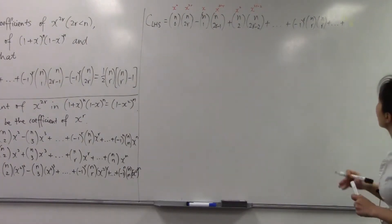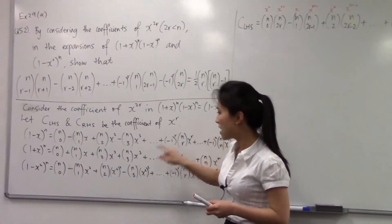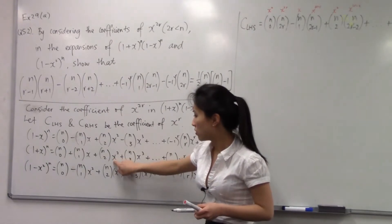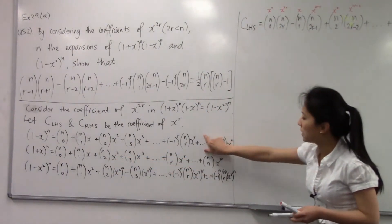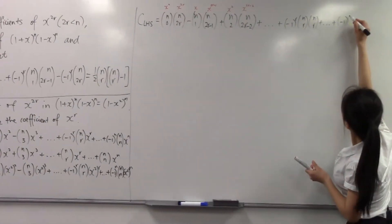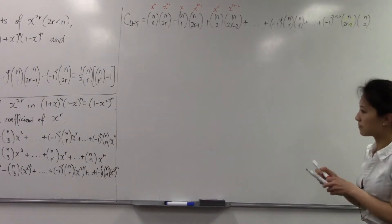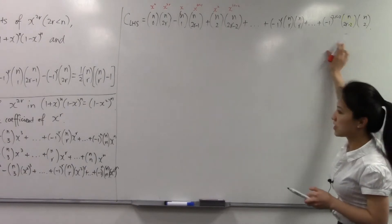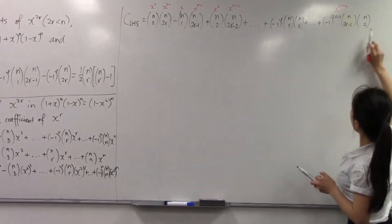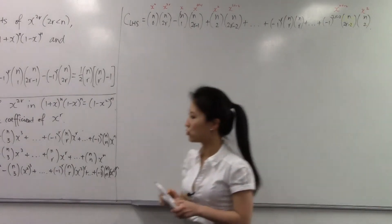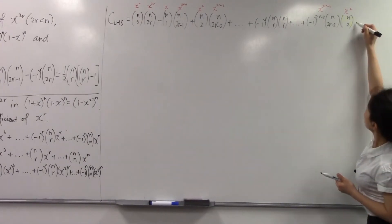Let's write out a few more terms following this pattern. Some term here multiplied by n choose 2 times x to the power of 2, so that term multiplied by this term must give us x to the power of 2r. That term in here is the coefficient belonging to x to the power of 2r minus 2, and this is the coefficient of x squared in the other expansion — so when multiplied they give x to the power of 2r. Similarly, let's continue this.